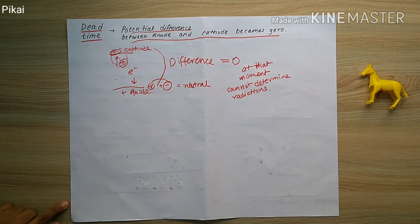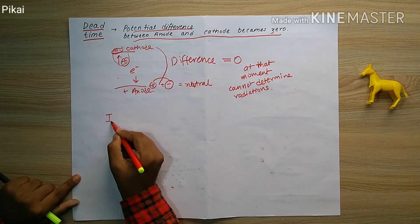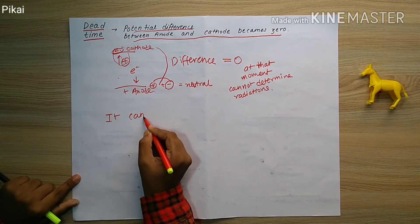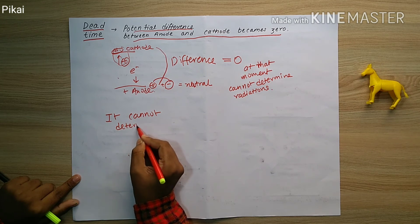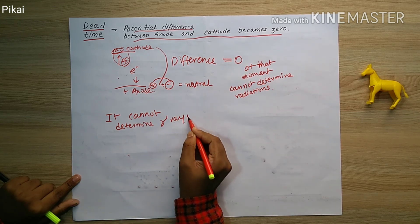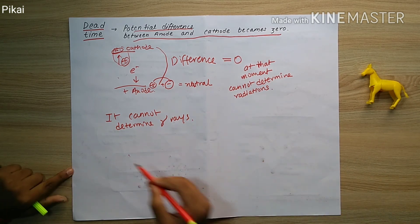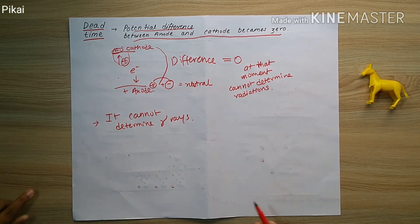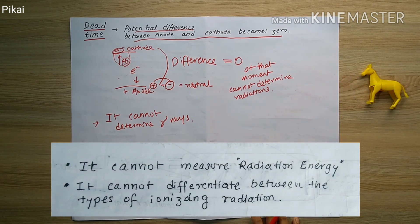Another disadvantage is that the Geiger-Muller counter cannot detect gamma rays. Incoming gamma radiation inside the Geiger-Muller chamber cannot be determined. These are the main disadvantages of the Geiger-Muller counter.